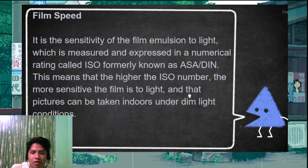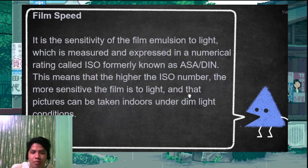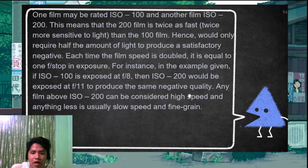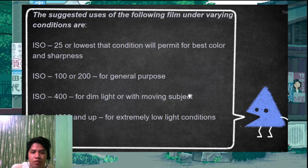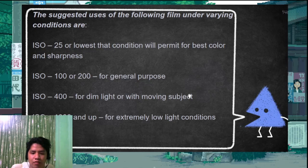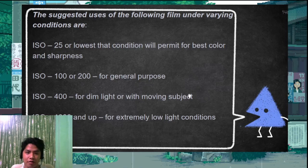Film speed, also called emulsion speed, refers to the light sensitivity of the film, measured by ISO, DIN, and ASA. ISO 25 or less gives best color and sharpness. ISO 100 or 200 is for general purpose. ISO 400 is for moving objects — it records faster. ISO 1000 is for extremely low light conditions. That's all, guys. Thank you for listening and have a great day.